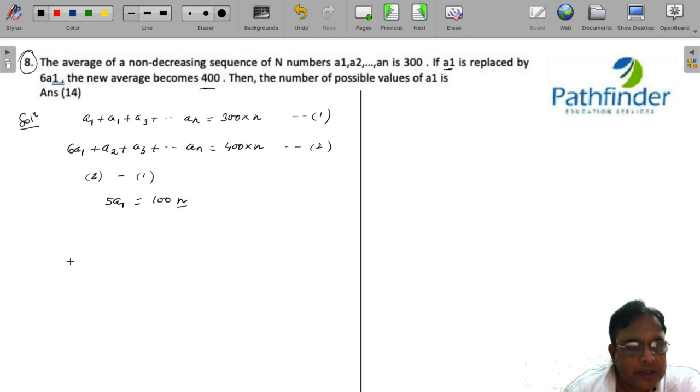Let us see if n can be equal to 1. So if n is equal to 1, it means that a1 must be equal to 20. But if n is 1, then we can have only one number, and if that one number itself is 20, the average of n numbers cannot be 300. So n equals 1 cannot be a solution here.